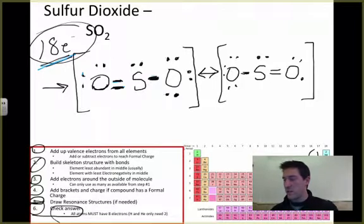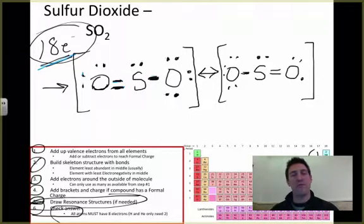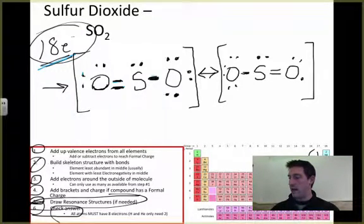If I check again, all atoms now have 8 electrons. I've just figured out what step 5 is about: drawing resonance structures to represent all possible configurations for sulfur dioxide.